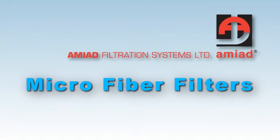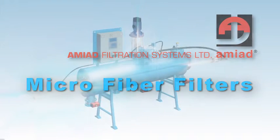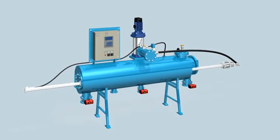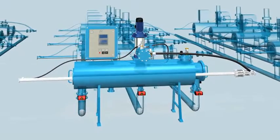Amiad Automatic Microfiber Series fine filtration down to 2 microns. This automatic filtration system can operate independently as one single unit or as part of multiple filter installation.